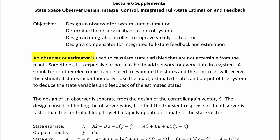An observer or estimator is used to calculate state variables that are not accessible from the plant. Sometimes it's expensive or not feasible to add sensors for every state in a system. A simulator or electronics can be used to estimate the states, and the controller will receive the estimated states instantaneously. You then use the input, the estimated states, and the output of the system to deduce the state variables and feedback of the estimated states.